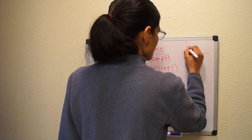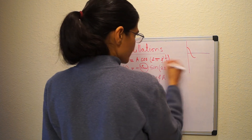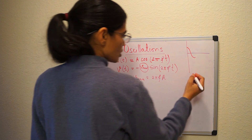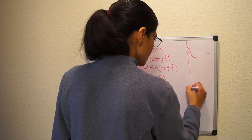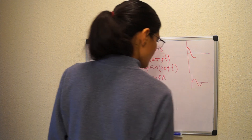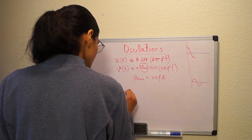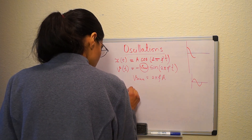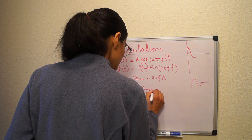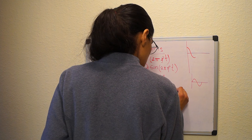The position function is cosine, so the position-versus-time graph starts at maximum amplitude at t = 0. The velocity function is sine, so the velocity-versus-time graph starts from the origin. For acceleration, a(t) = -a_max cos(2πft).